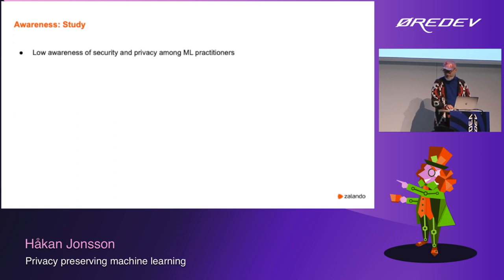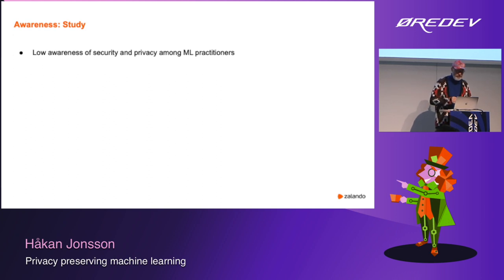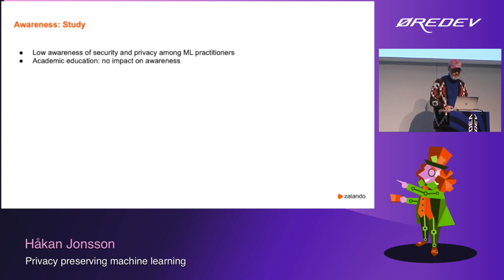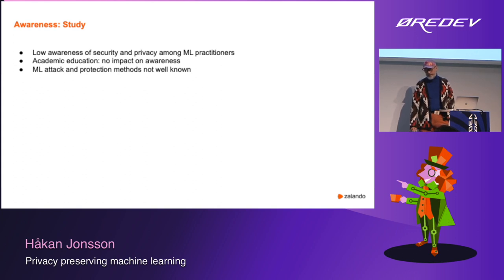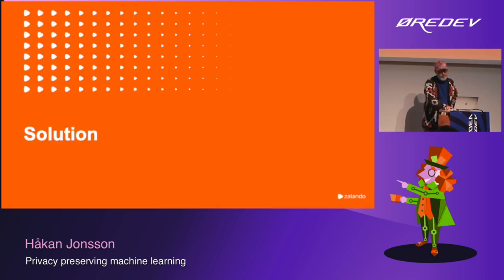What's the current state of awareness of these threats in industry? A study by Franziska Bönisch at the Fraunhofer Institute, through interviewing many practitioners, concluded that there's low awareness of security and privacy in general among machine learning practitioners. There's also no correlation between academic education and awareness, probably because there is no academic education in this area. Machine learning attack and protection methods are not well known among ML practitioners, and GDPR had no major impact on machine learning workflows, which is a bit worrying.